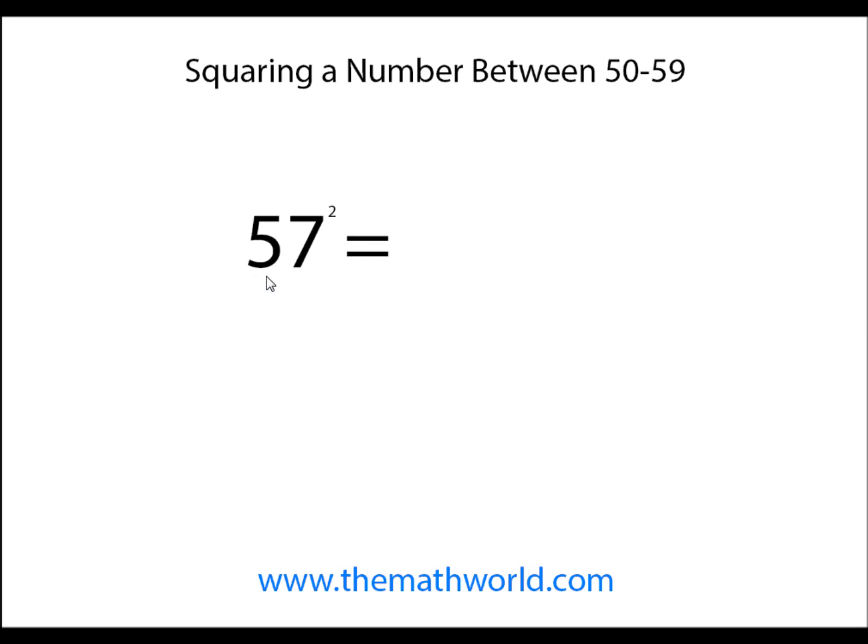First example we're going to look at is 57 squared. The first thing we do is take this ones digit number and square that number. So 7 times 7. We'll write that down, 49.